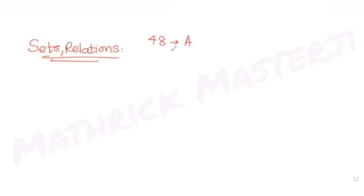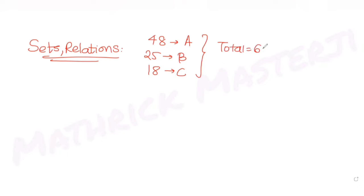Hi guys, I hope you are all doing well. Let's see today's question. Today's question is from the topic of sets, relations and functions. The question tells us that an organization awarded 48 medals in event A, 25 medals in event B, and 18 medals in event C. These medals went to a total of 60 men.